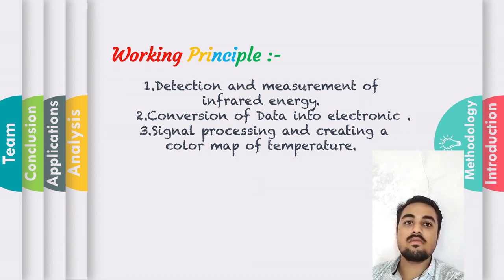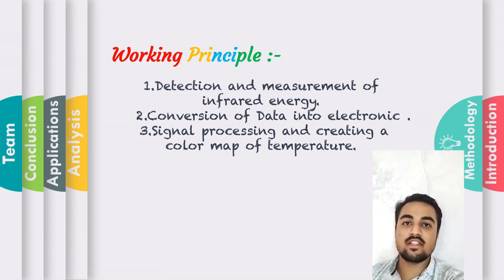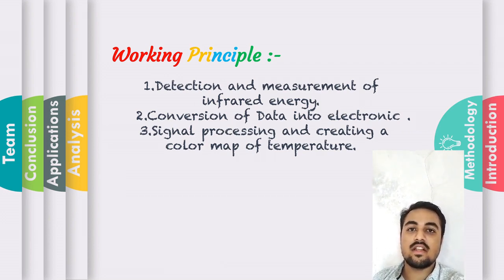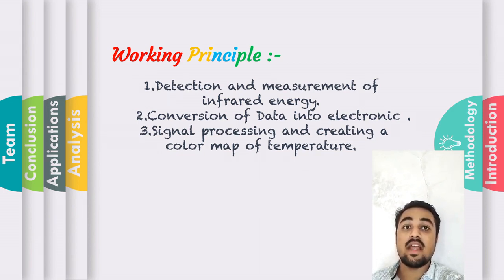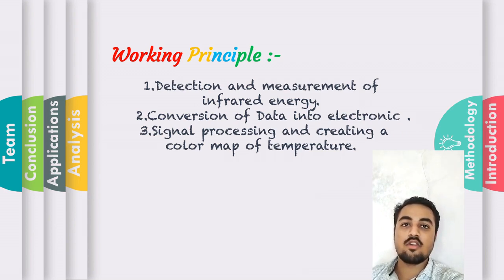The thermal sensor chip contains a sum of pixels which react with infrared energy and produce electronic signals. These electronic signals are taken by the processor of the camera, which calculates them mathematically and creates a colored image of the apparent temperature of the bodies, displaying it on the screen.